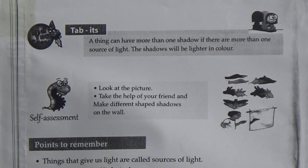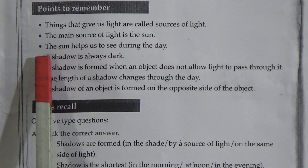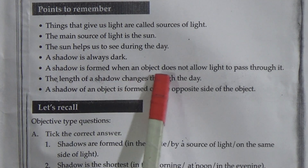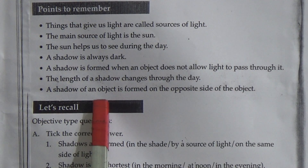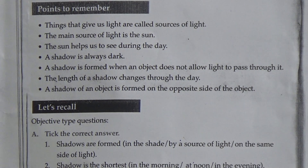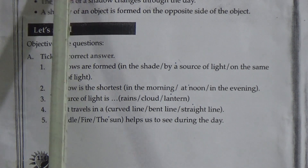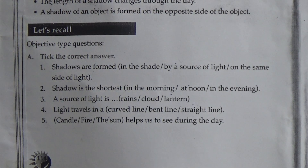Points to remember: Things that give us light are called sources of light. The main source of light is the sun. The sun helps us to see during the day. A shadow is always dark. A shadow is formed when an object does not allow light to pass through it. The length of a shadow changes through the day. A shadow of an object is formed on the opposite side of the object.